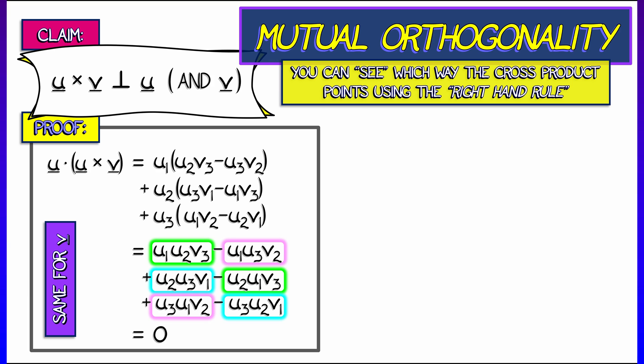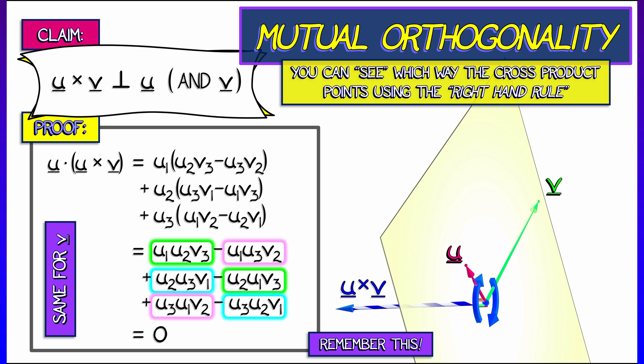Given u and v, you take the plane that they span. The cross-product has to live along the line that is orthogonal to the plane at that point. Now, which direction it points in is obtained using what is called the right-hand rule.